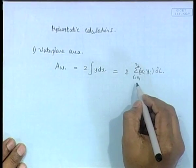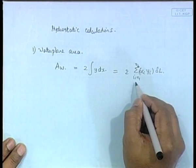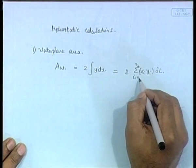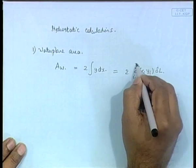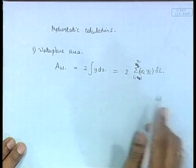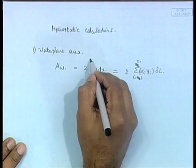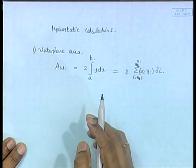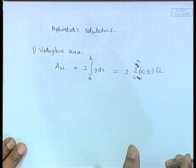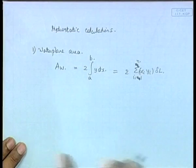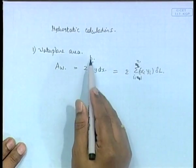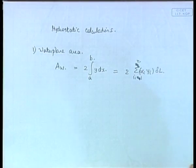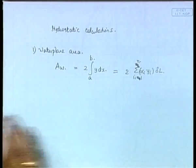You are integrating between station n1 and n2 — that is, i equals 1 to n — to avoid confusion. What we are really doing is x going from x equal to 0 up to the total length L, the length of the ship. So it goes from the aft station to the forward station, and that will give you the total water plane area.